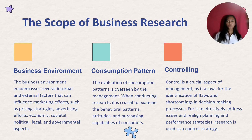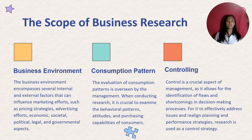For the third scope, we have controlling. Control is a crucial aspect of management as it allows for the identification of flaws and shortcomings in decision-making processes. In order to effectively address these issues and realign planning and performance strategies, research is employed as a control strategy by management.